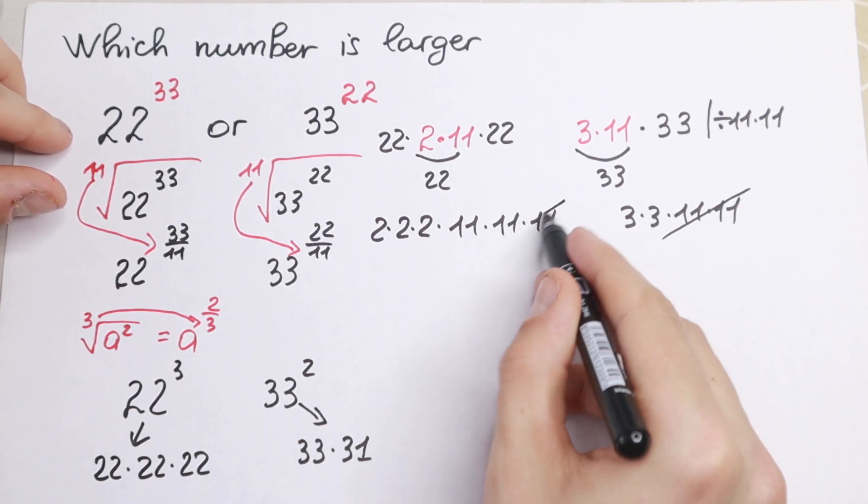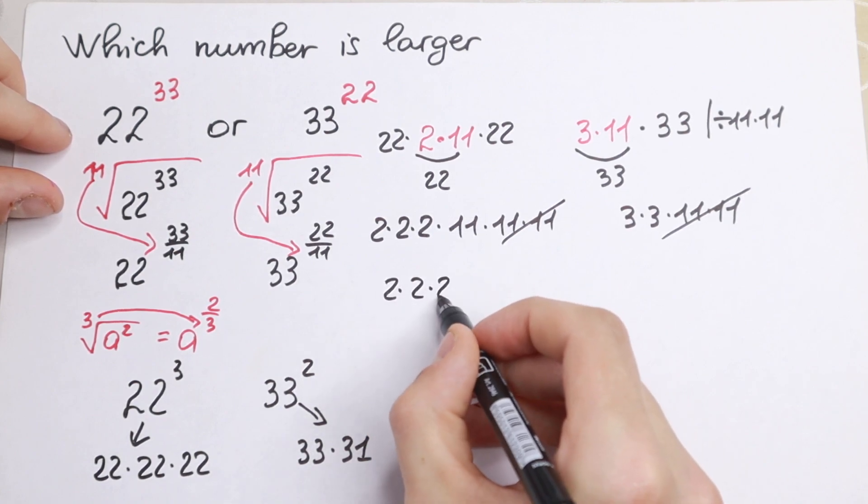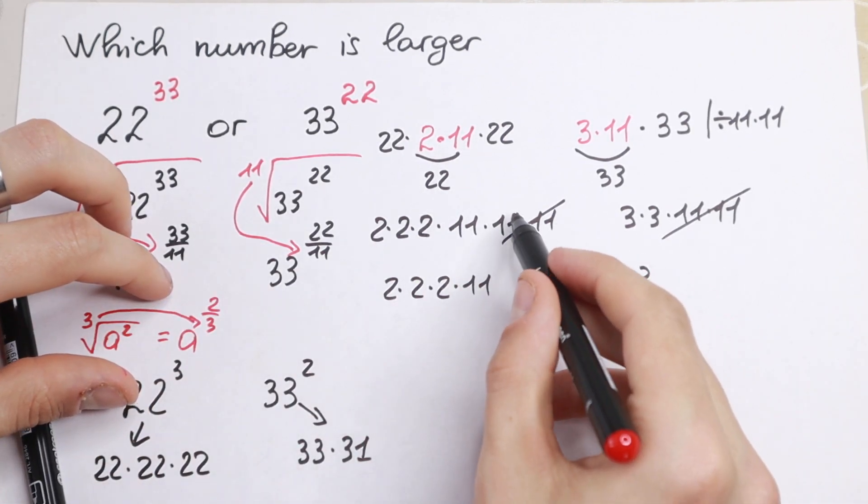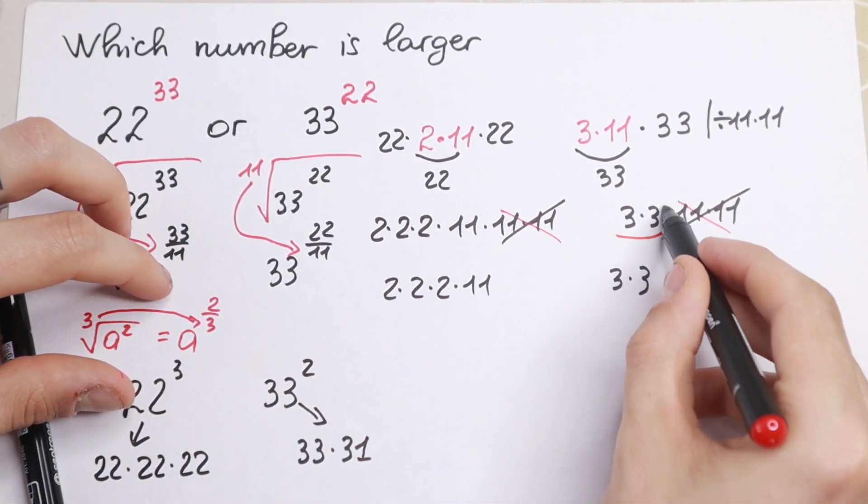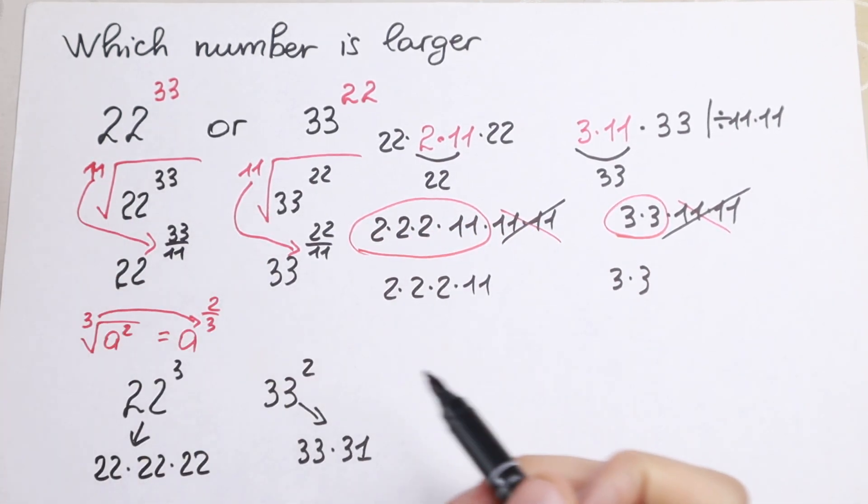So we can easily cancel this. Right here on both parts. So we will have 2 times 2 times 2 times 11 and 3 times 3. We cancel this and we will have only 3 times 3. So how can we compare this?